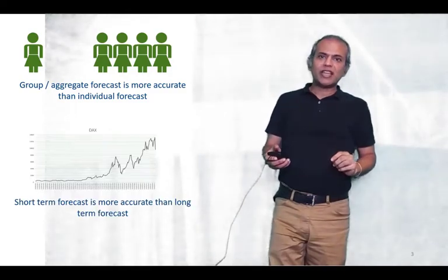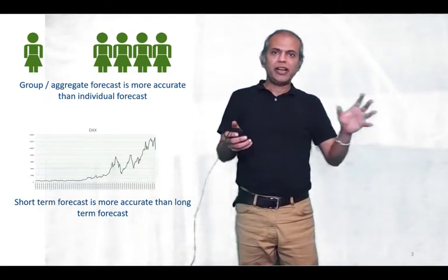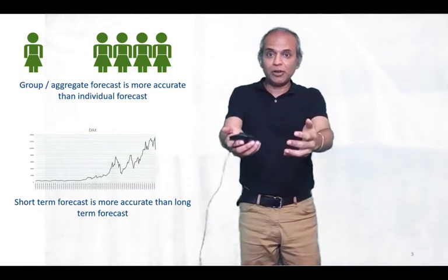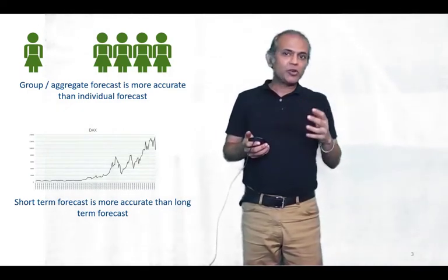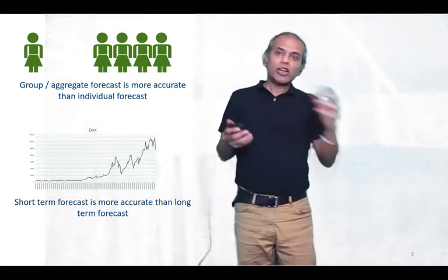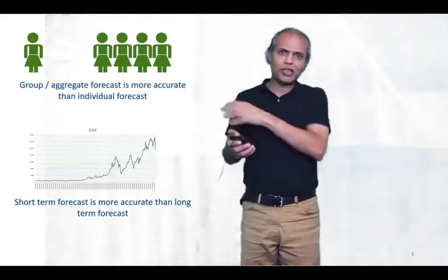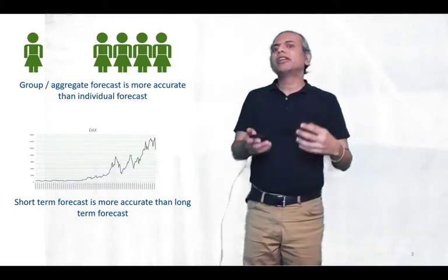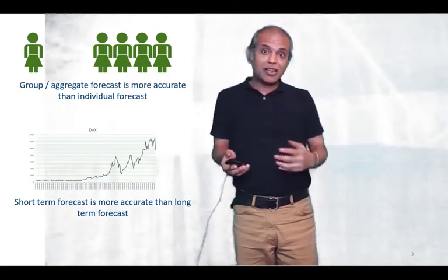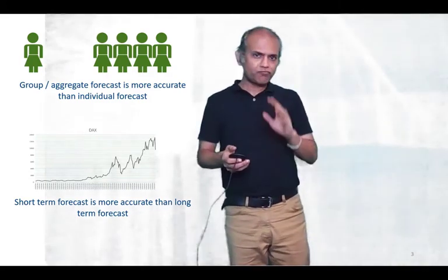Principle number two says that short-term forecasts are always more accurate than long-term ones. If I ask you what you're doing tomorrow or in the next hour, you'll be far more accurate than if I ask what you're doing one year from now. In stock markets, it's relatively easier to predict the price of a stock tomorrow or a couple of weeks later, and much more difficult to predict the price a year or five years later.